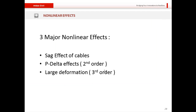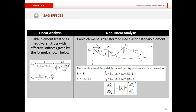Now let's discuss nonlinear effects. There are three major nonlinear effects to consider in cable bridges: the sag effect of cables, the P-delta effect or second order effect, and large deformation or third order effects. For linear analysis, the cable element is treated as an equivalent truss with effective stiffness given by the Ernst formula. For nonlinear analysis, the cable element is transformed into an elastic catenary element whose stiffness matrix also considers geometric stiffness.